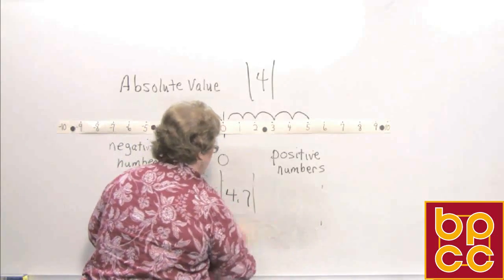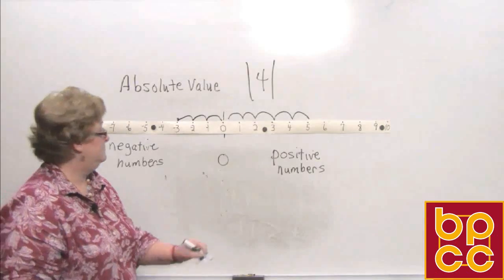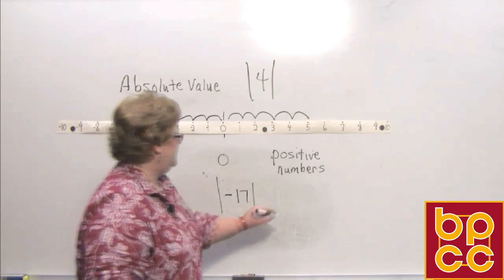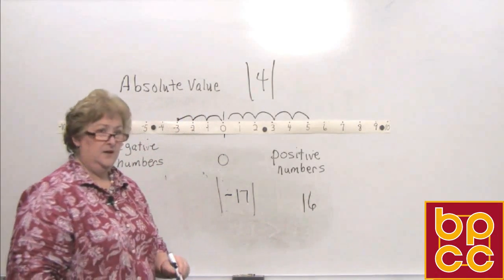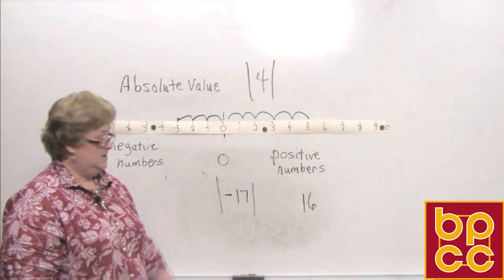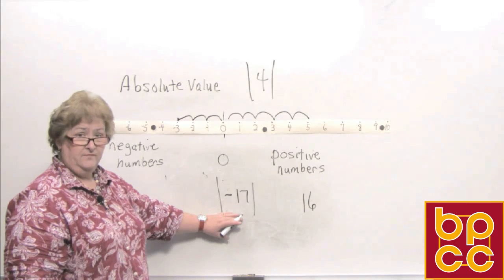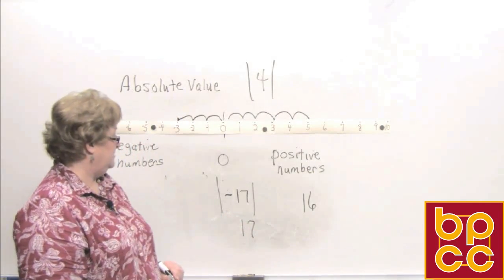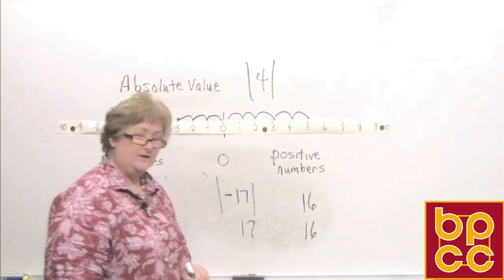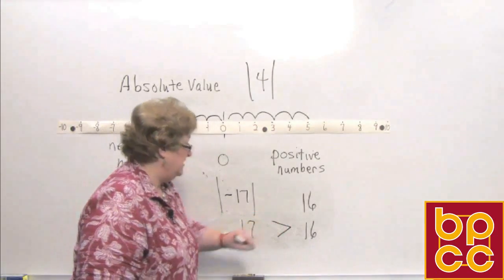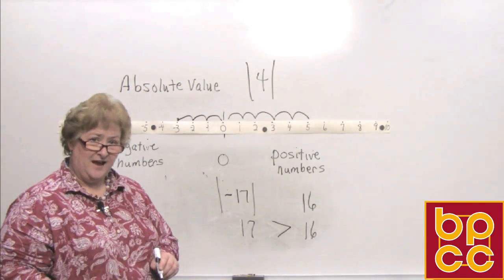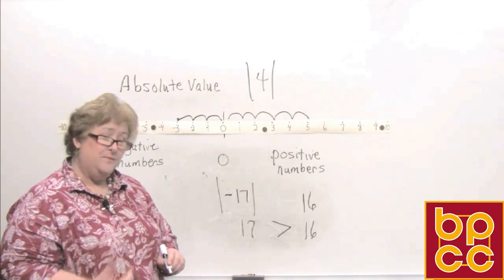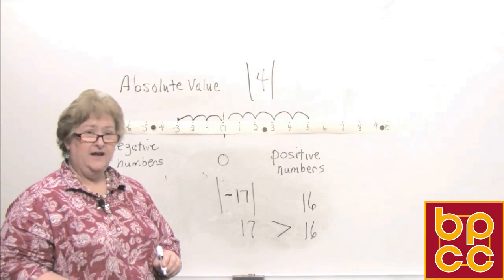Let's try one where one of them is in absolute value and one is not. We have the absolute value of negative 17 compared to 16. Well, 16 is still 16. But the absolute value of negative 17 is positive 17. So I'm now comparing positive 17 to 16, and 17 is greater than 16. Remember: when doing absolute value, always bring the number out of the absolute value signs and make it positive. When comparing numbers in absolute value, bring them out first, then compare them.